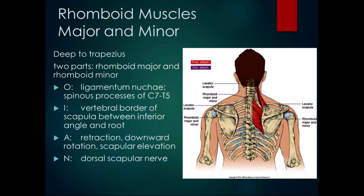The rhomboid major and minor have a broad origin and broad insertion — they're rhomboidal muscles. The origin is the ligamentum nuchae and the spinous processes of C7 through T5. The insertion is the vertebral or medial border of the scapula between the inferior angle and the root. The fibers run slightly superior to inferior, and the main motion is scapular retraction. The rhomboids also function in the force couple for downward rotation, and they are part of the scapular elevators group because of their line of pull. They're innervated by the dorsal scapular nerve.